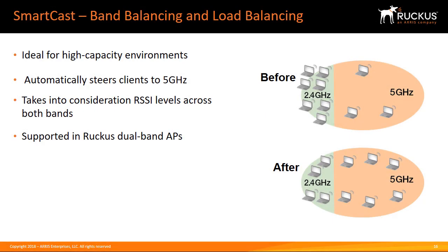SmartCast employs sophisticated load balancing and band balancing techniques to enable clients to efficiently use AP and spectrum resources. This is ideal for high-density client environments such as auditoriums, conference halls, and public venues where many users try to concurrently connect. Band balancing spreads client devices across available bands, while load balancing spreads the load across available access points.